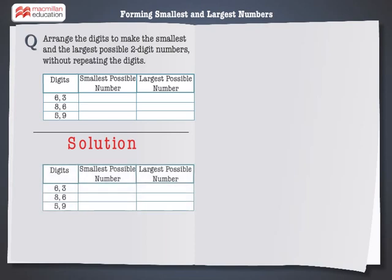Let's solve the first problem. Here we have the digits 6 and 3. To form the smallest number with 6 and 3, put the smaller digit in the tens place. Here, 3 is smaller than 6. So, the smallest number formed with the digits 6 and 3 is 36.